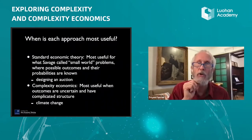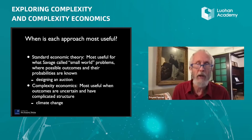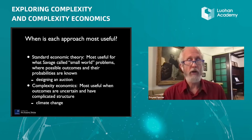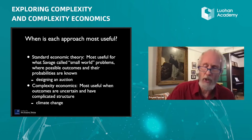Maybe to contrast the two approaches, in standard economic theory, as Jimmy Savage called it, he said it's suited for what he called small world problems where possible outcomes and their probabilities are known. An example being designing an auction.